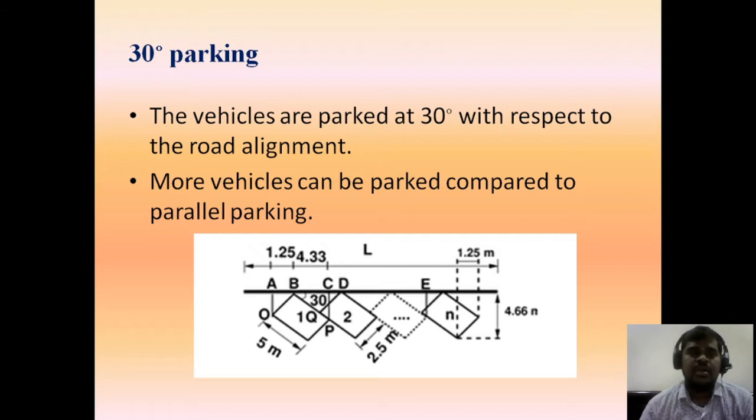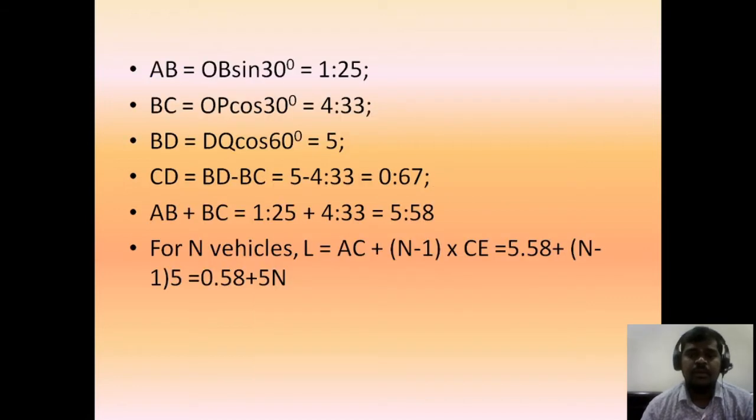Coming to the second type of parking, that is 30-degree parking. As shown in the figure, the vehicles are parked at 30 degrees to each other. Actually, they will be parallel, but at 30 degrees to the pavement. AB equals OB sin 30 degrees, BC, CD. For total N vehicles, the total length is calculated by AC + (N-1) × CE, which equals 5.58 + (N-1) × 5, that is 0.58 + 5N.